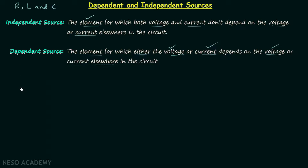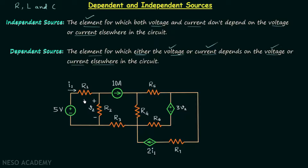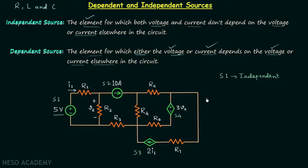To understand this, let's take one example. In this circuit we have seven resistances, but we are concerned about the sources. There are four sources present — let's call them S1, S2, S3, and S4. Source S1 is providing a voltage equal to 5 volts, and since this voltage does not depend on the current or voltage in any other part of the circuit, source S1 is an independent source.